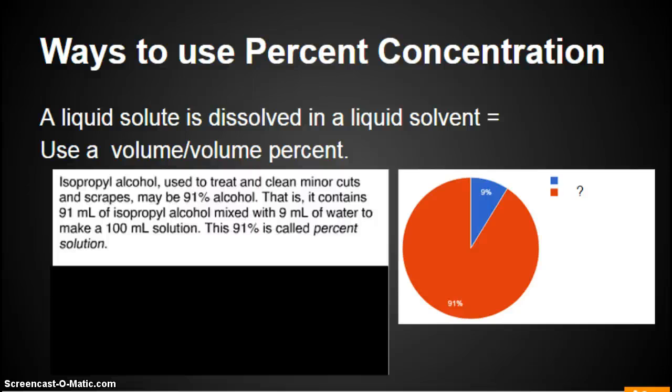A liquid solute is dissolved in a liquid solvent. Use a volume-volume percent. Isopropanol alcohol used to treat and clean minor cuts and scrapes may be 91% alcohol. That is, it contains 91 milliliters of isopropyl alcohol mixed with 9 milliliters of water to make a 100 milliliter solution. This 91% is called a percent solution. So all of this red would represent 91%, this is how much is the isopropyl alcohol. 9% is how much water. The entire thing is 100%.